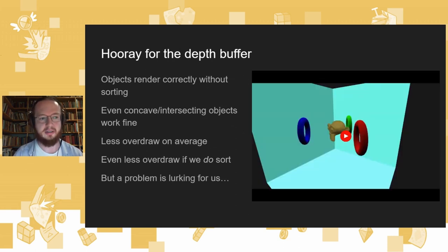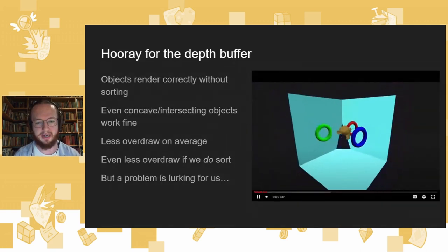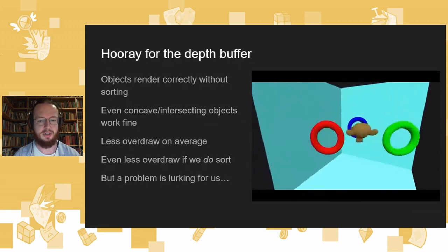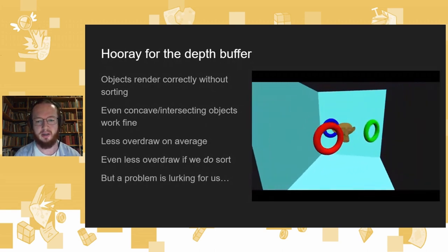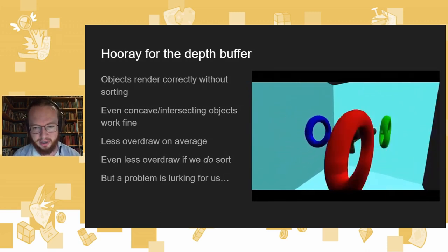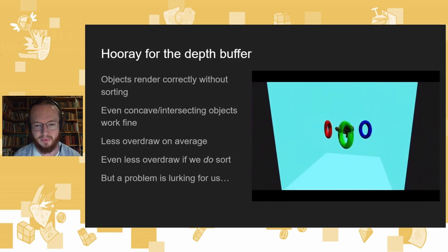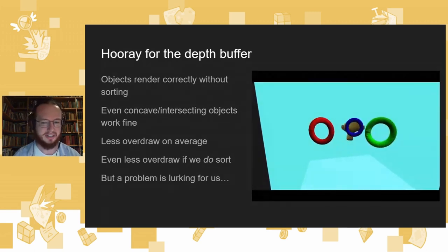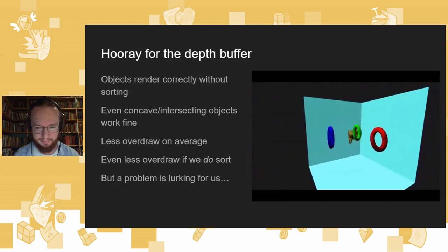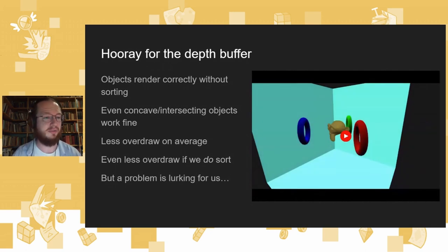I've made this little video to show what life is like without a depth buffer — really to show you how broken things tend to be. Here we are with depth buffering turned on, flying around, looking at things, all is well. That's how broken things are with depth buffering turned off: you can see through the wall, the rings are not correctly drawing behind, they're looking really weird. And there we are with it turned back on again.